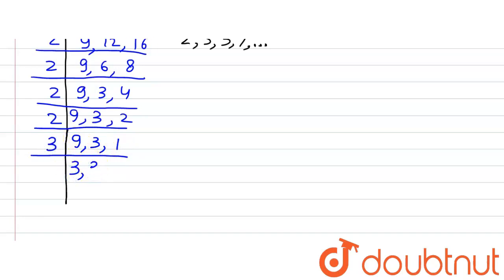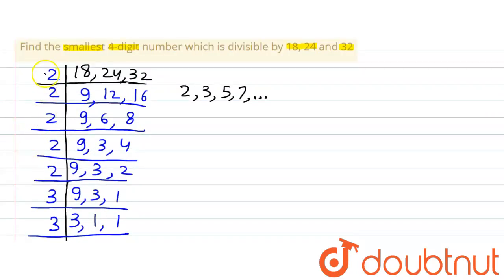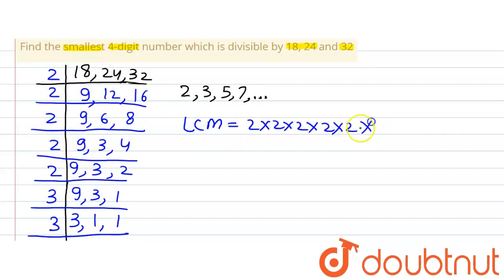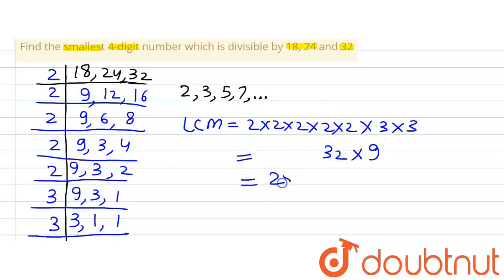9 divided by 3 gives us 3. 3 divided by 3 gives us 1, and 1 remains as it is. Again dividing by 3 we get 1, 1, 1. The LCM is the product of all these divisors: 2 appears 5 times and 3 appears 2 times, so LCM = 2 × 2 × 2 × 2 × 2 × 3 × 3 = 32 × 9 = 288.